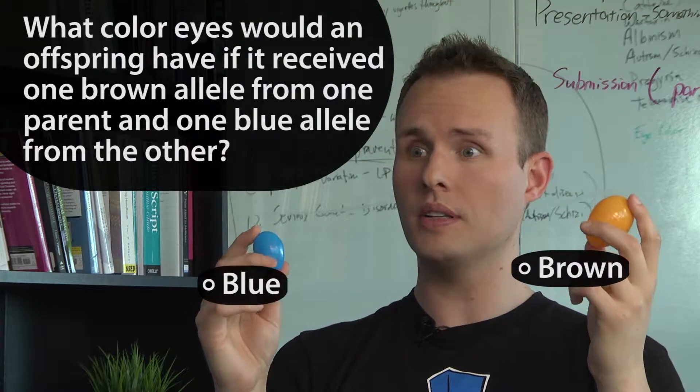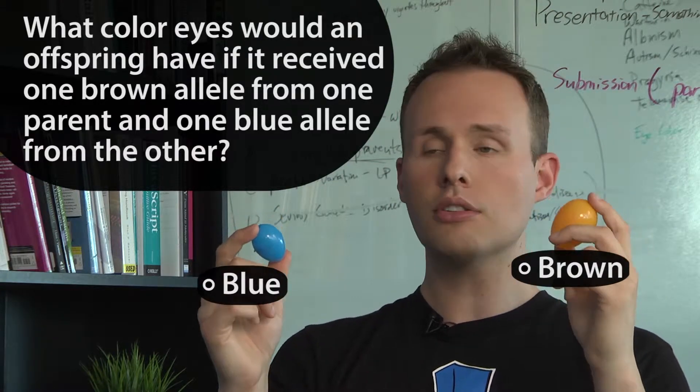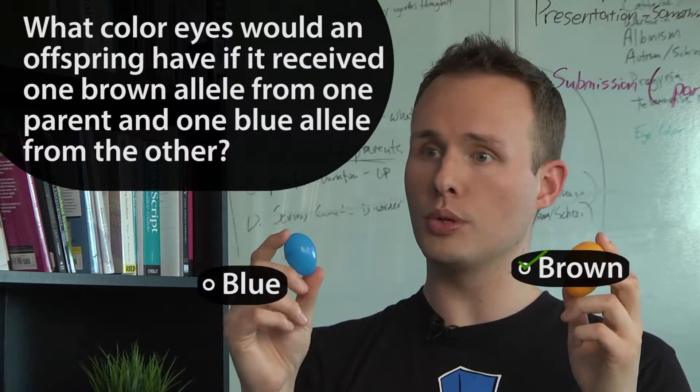In our case of eye color where we have a brown allele and a blue allele, it turns out that our brown allele is dominant over our blue allele.